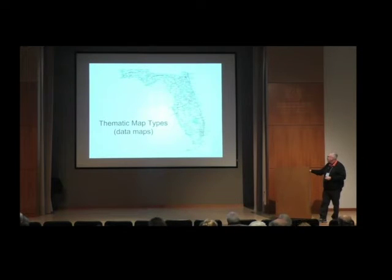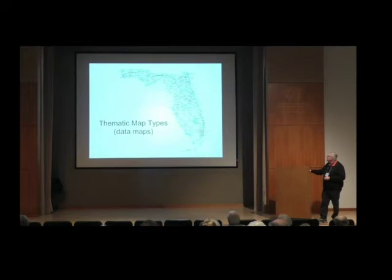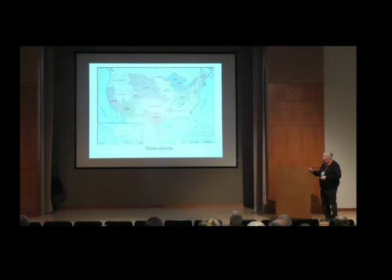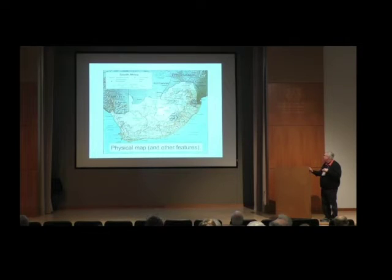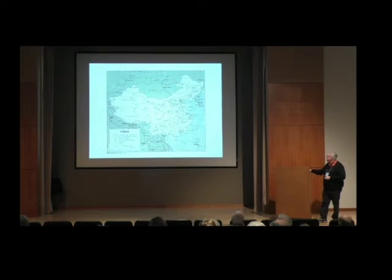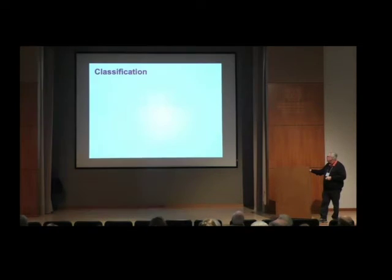Now we're going to talk about thematic maps — data maps of various sorts. Maps come in all kinds of configurations: standard highway maps showing roads, lanes, streets, and watersheds; physical maps using color shading to represent physical landscape; standard political maps showing country or province divisions; and geology maps. When you start talking about mapping data of various sorts, you have to think about classification.